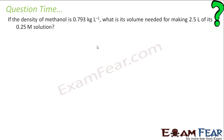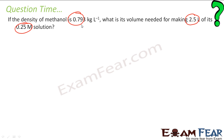If the density of methanol is 0.793 kg per liter, what is the volume you need for making 2.5 liter of its 0.25 molar solution? I have been told that the molarity of the solution is 0.25 M, and I am asked what is the volume you need to make 2.5 liter of its 0.25 M solution.